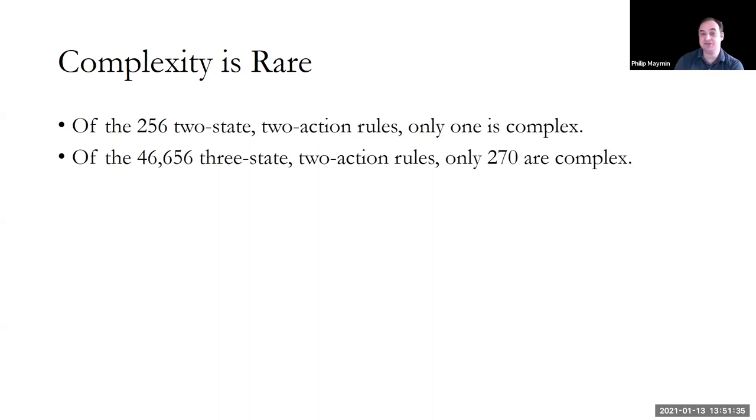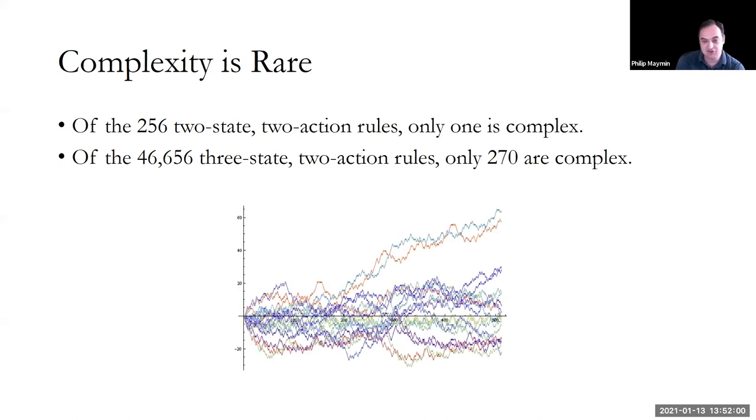We want to look back at least five, because otherwise it's just too simple. If we try them all, we find that of the 256 possible rules, only one effectively unique one is complex. If we had a third state where the representative investor could buy, sell, or hold, then there's 46,000 such rules. Only 270 of them are complex. Complexity is rare. This is something that's pretty consistent across everything I've ever seen. As we saw in cellular automaton, complexity is rare, but it does happen. And the only way to find it is po Wolframsky. Check them all. You have to check them all. There's no other way to do it.